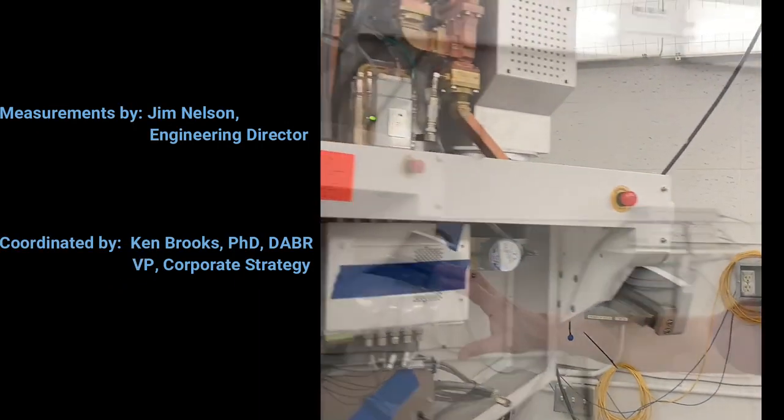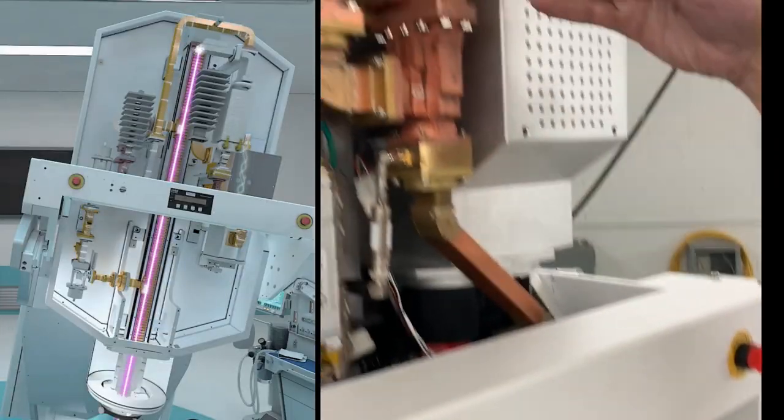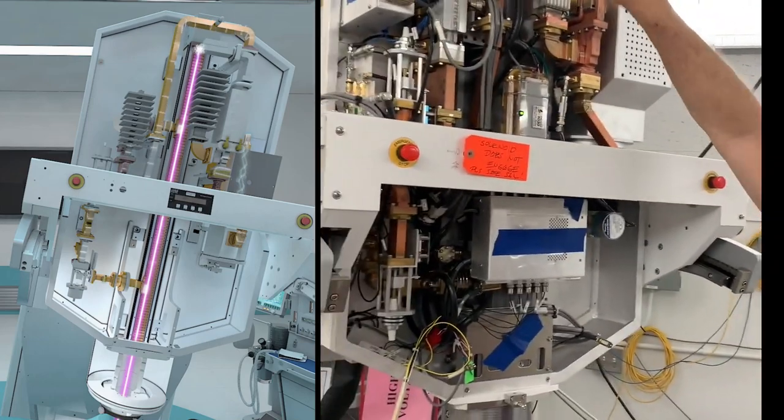He's going to describe the machine. Here we have the magnetron, runs at 9.2 gigahertz. RF power comes out of the magnetron, goes through an isolator here, comes all the way around.